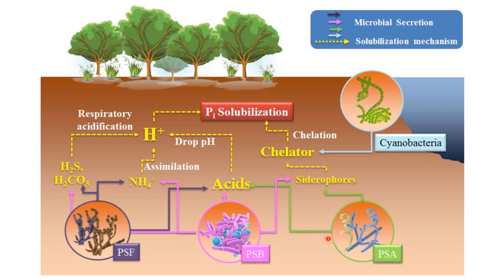PSF is phosphate solubilizing fungi, PSB is phosphate solubilizing bacteria, and PSA is phosphate solubilizing actinomycetes. They have different mechanisms through which they solubilize phosphorus, which is then made available for plant growth.